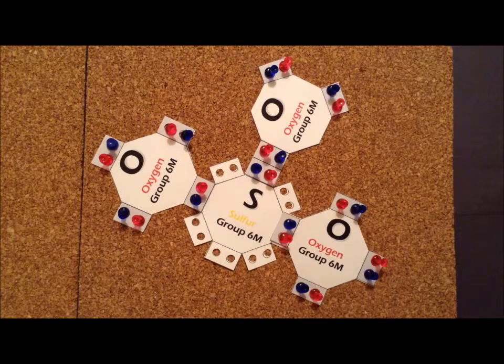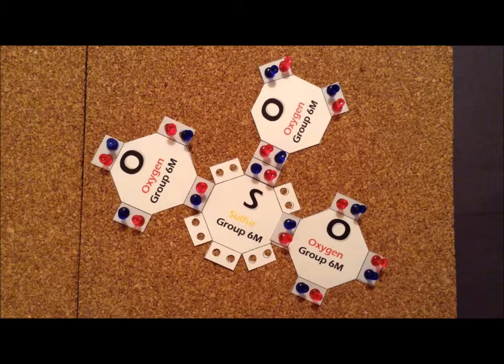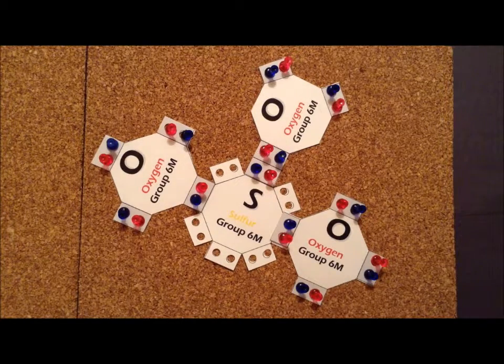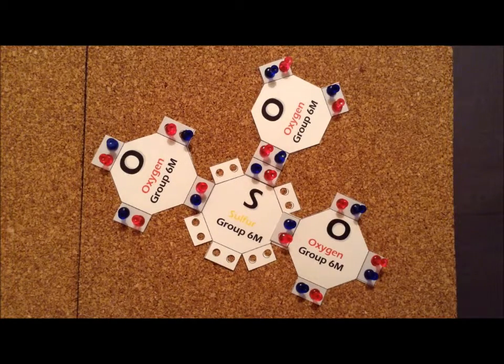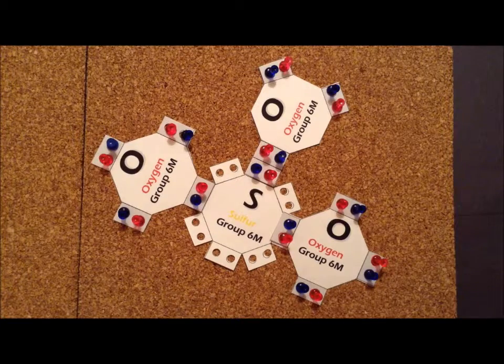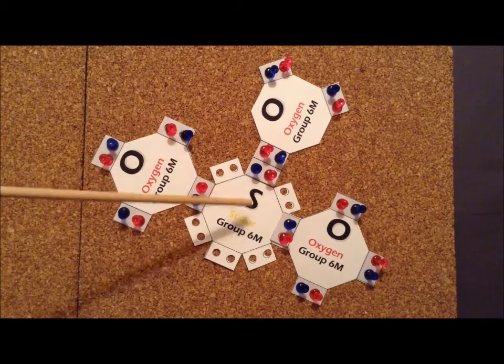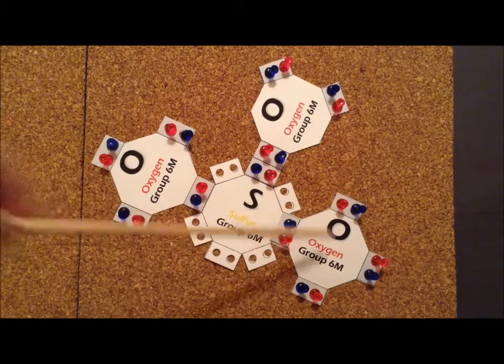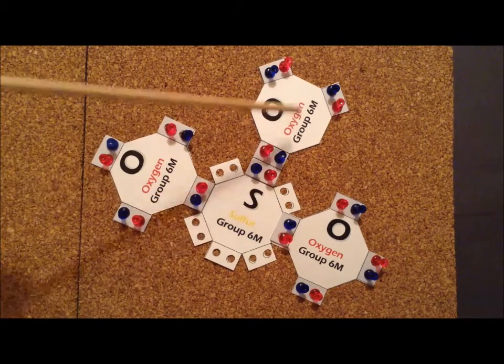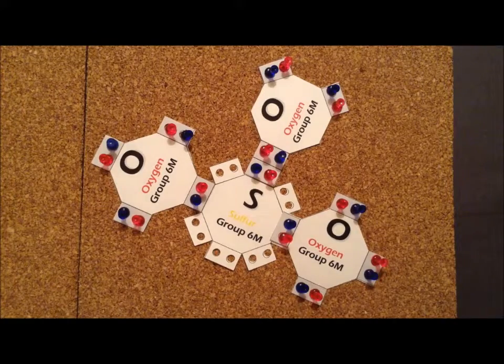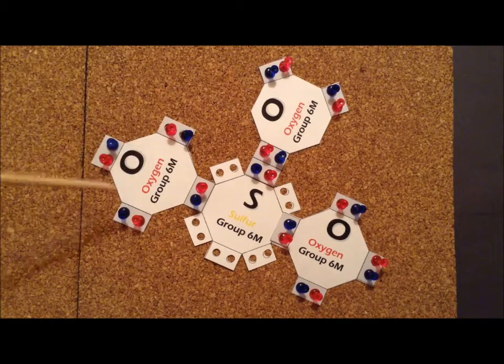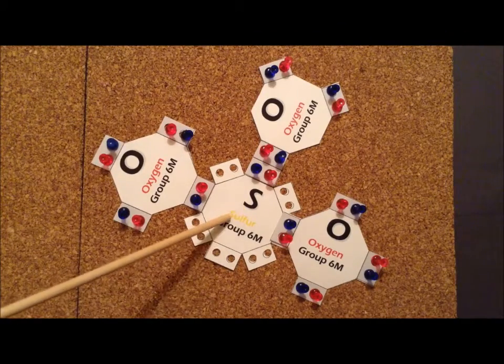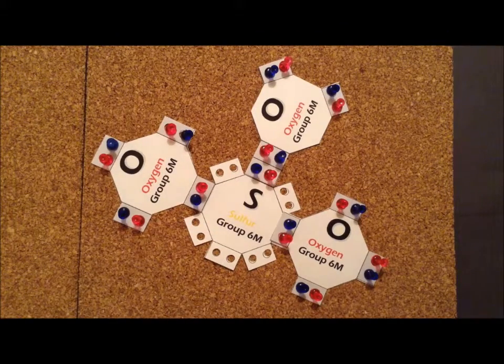We see another example of a 24 electron system. To accurately satisfy the octet rule for each of the atoms here, we need to have a single bond between sulfur and oxygen, a second single bond, and a sulfur-oxygen double bond. In the process, we're able to satisfy the octet rule for all the oxygen atoms, as well as the sulfur atom, while not needing to expand the octet.